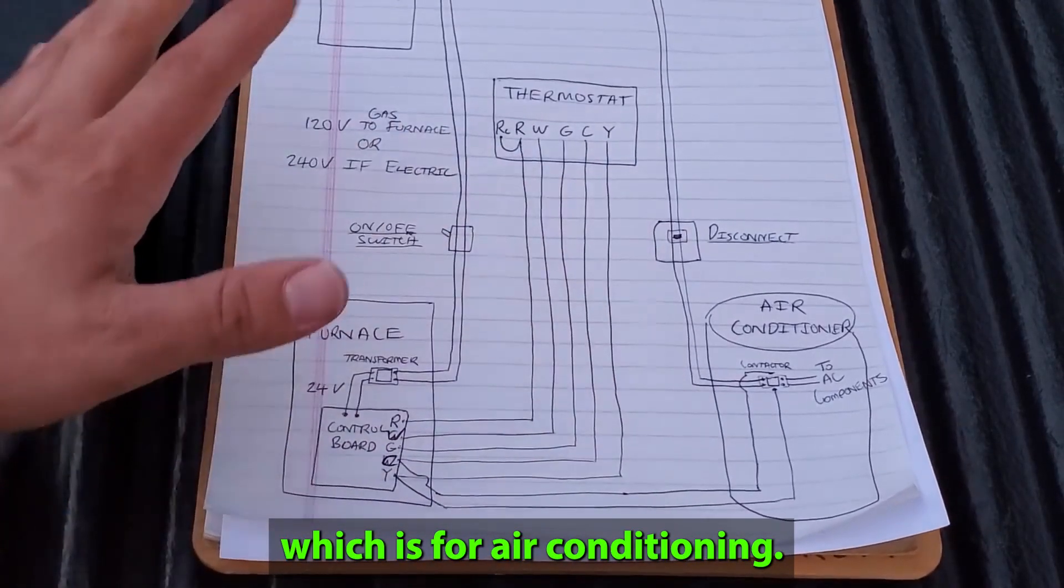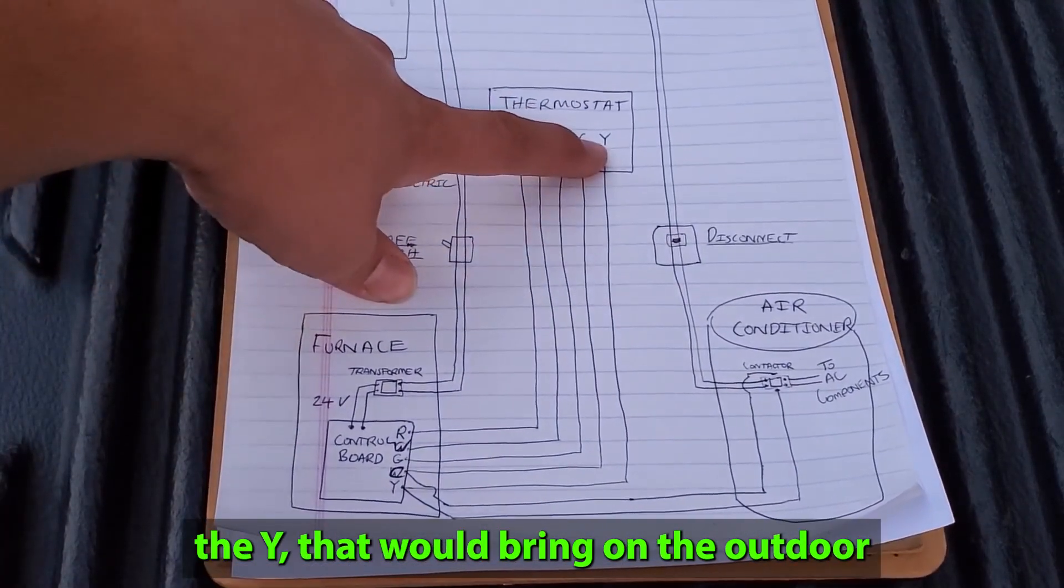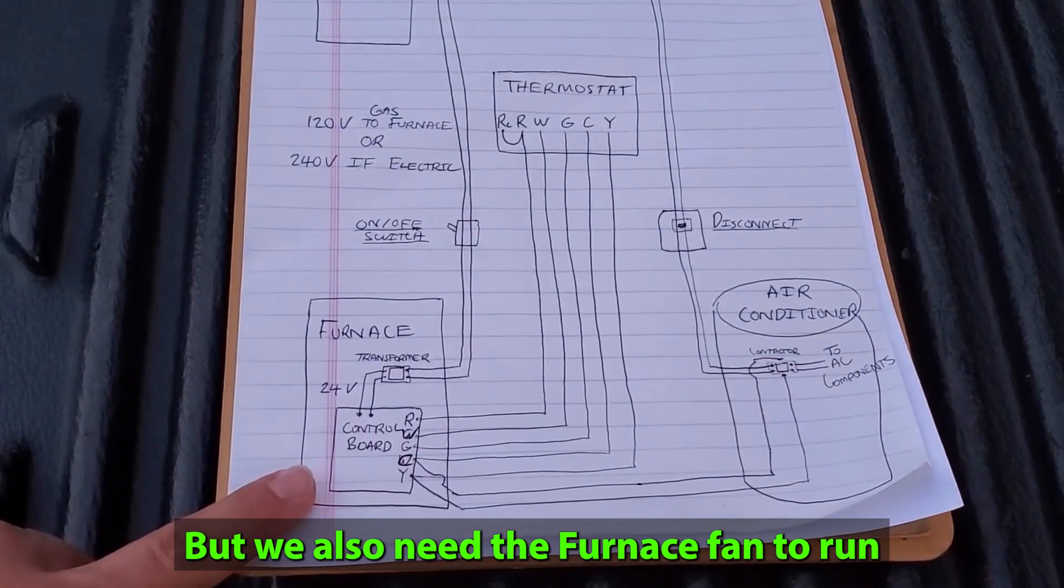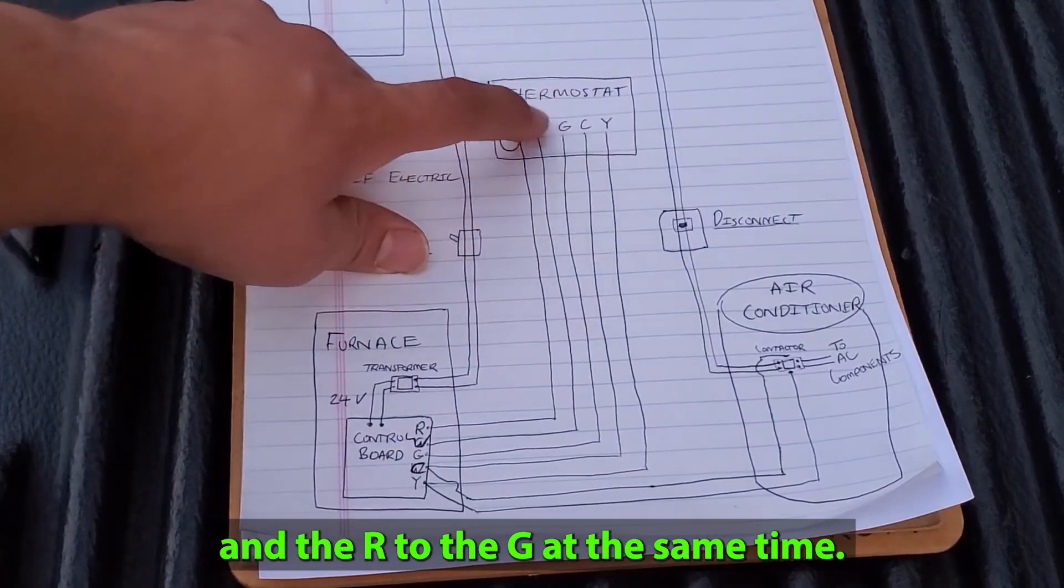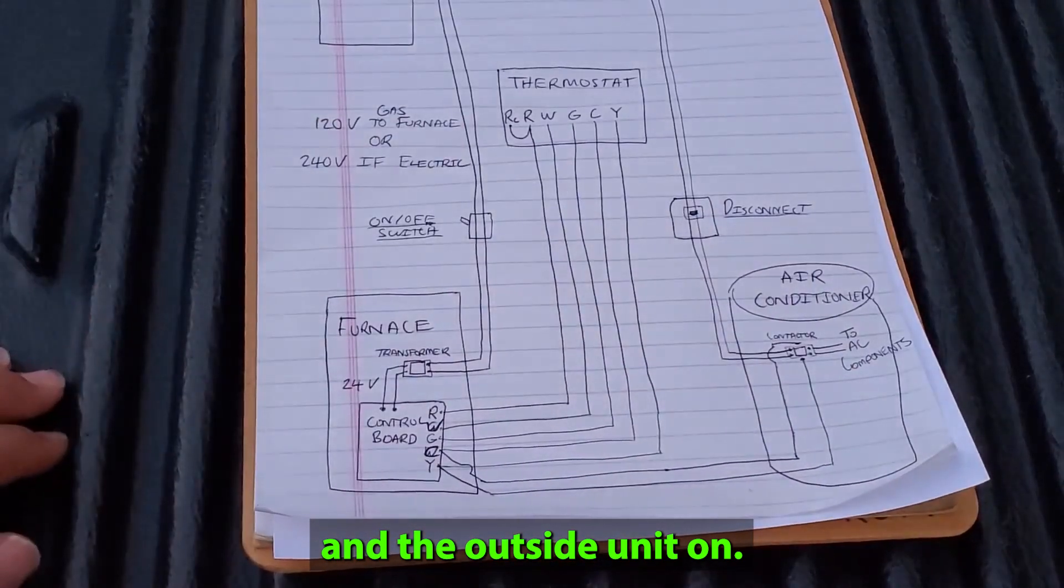Finally, we have the Y terminal, which is for air conditioning. When the thermostat applies power from the R to the Y, that would bring on the outdoor condensing unit, but we also need the furnace fan to run. So the thermostat will apply power from the R to the Y and the R to the G at the same time, bringing the furnace fan on and the outside unit on.